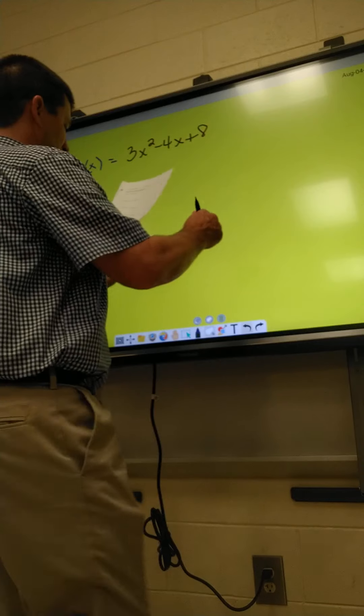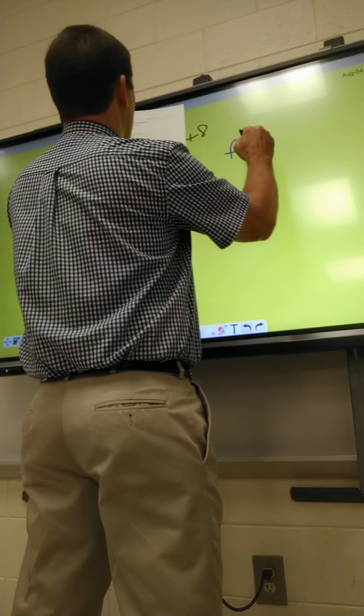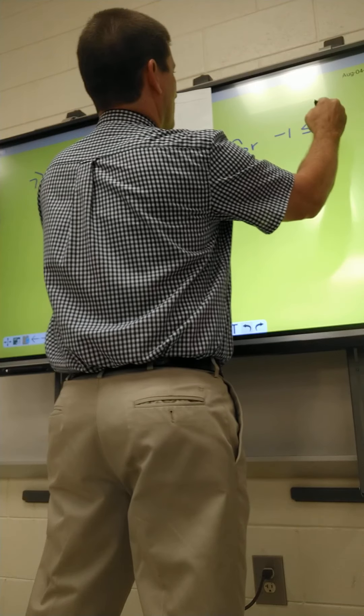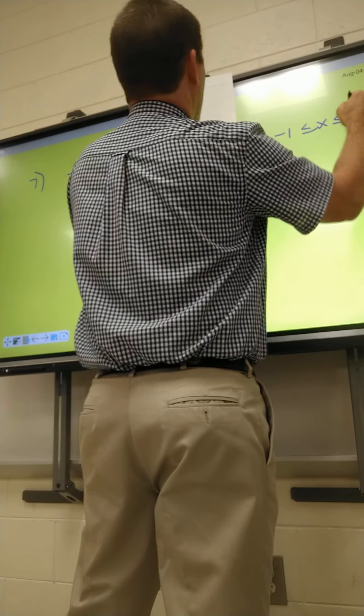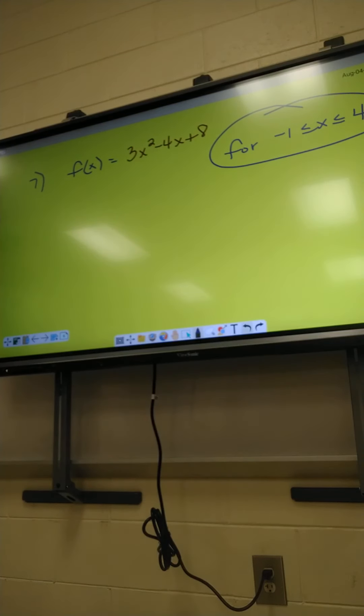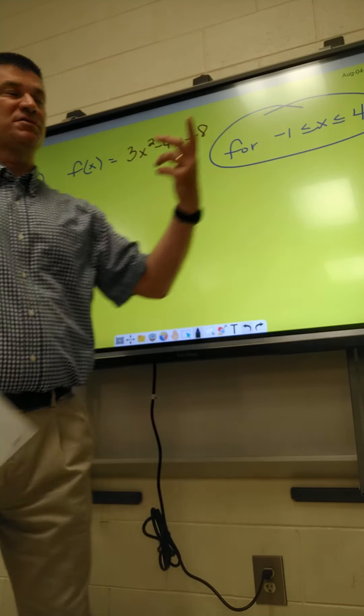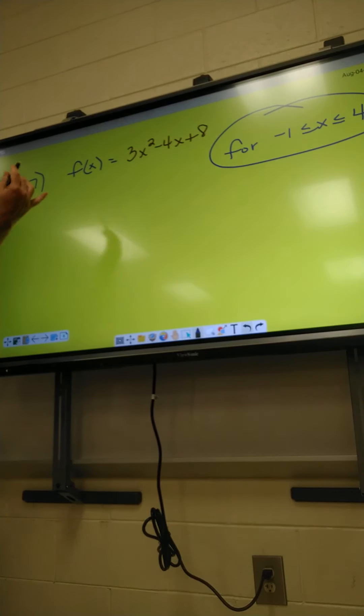Alright, 7's got something new on 7. Alright, you guys see this part on number 7? We didn't have one of these yesterday. What they want you to do is plug in every number starting at negative 1 going to 4. So, for example, the easiest way to do this one I think is just make an XY chart.